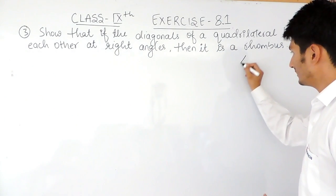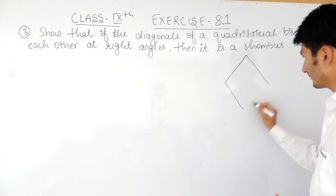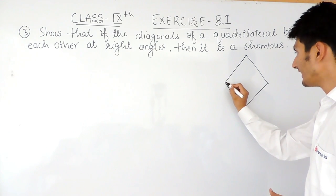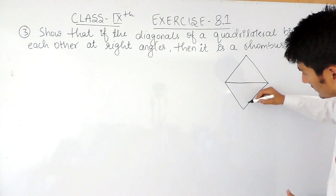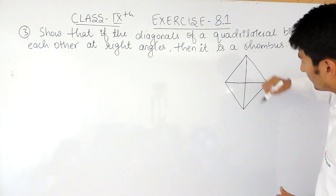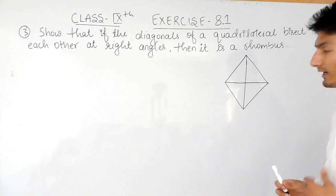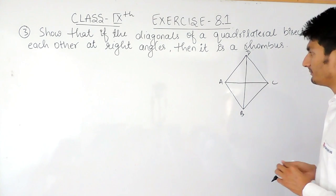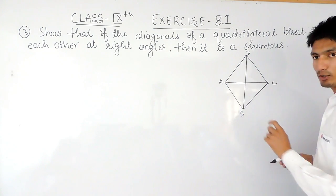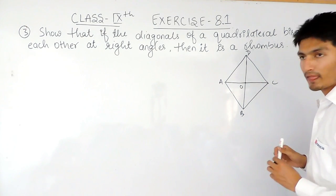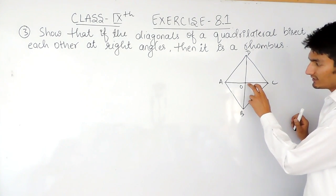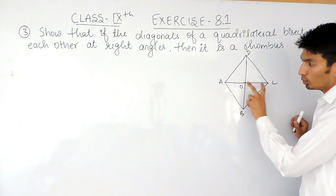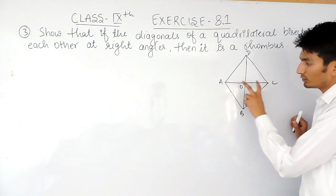We are given that there is a quadrilateral — a four-sided closed figure. Let's say this is quadrilateral ABCD, where AC and DB are two diagonals intersecting at point O. Bisecting means this point of intersection divides the diagonals into two equal parts.